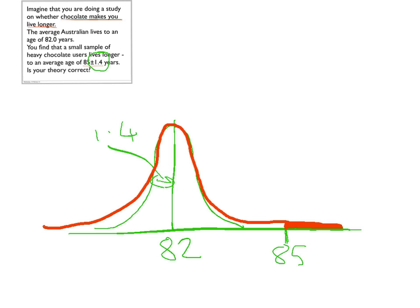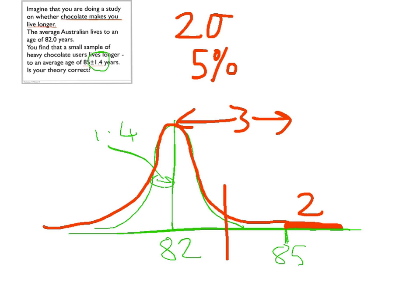Now 85 is a bit more than two standard deviations away. So that difference here is 3. Divide by 1.4, that's 2 and a bit. So that means we are two sigma, two standard deviations. We know that for a Gaussian distribution you'll be outside of that about 5% of the time, which means 2.5% on this side and 2.5% on that side.